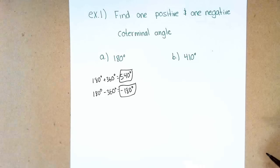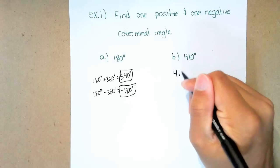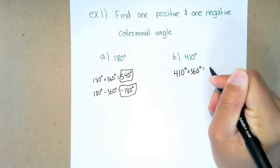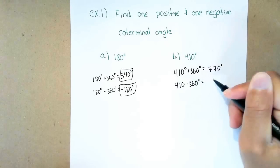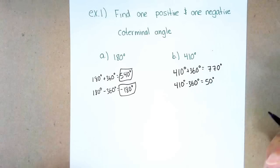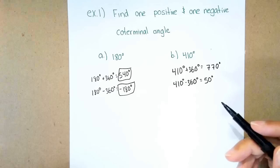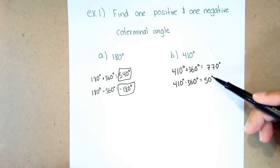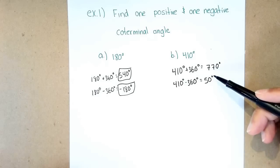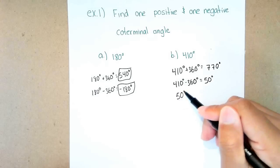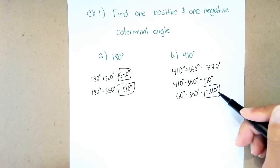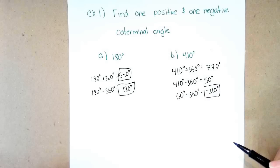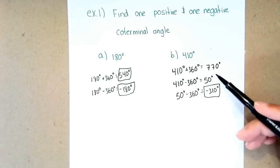Sometimes you might have to add or subtract more than once, as in example B. Adding 410 degrees plus 360 gives 770 — that's my positive coterminal angle. When I subtract 360, I get 50 degrees, which is still positive. So I have to subtract one more time: 50 minus 360 gives negative 310 degrees. That's my negative coterminal angle. Either 770 or 50 could be the positive coterminal angle — just make sure you end up with one positive and one negative.